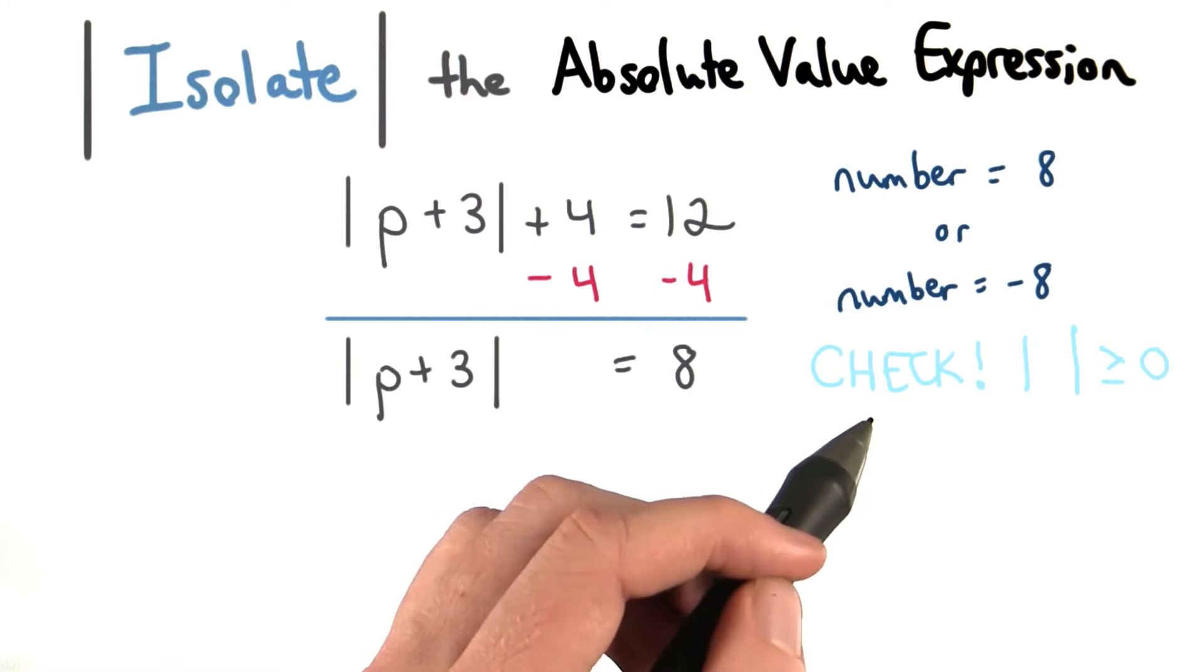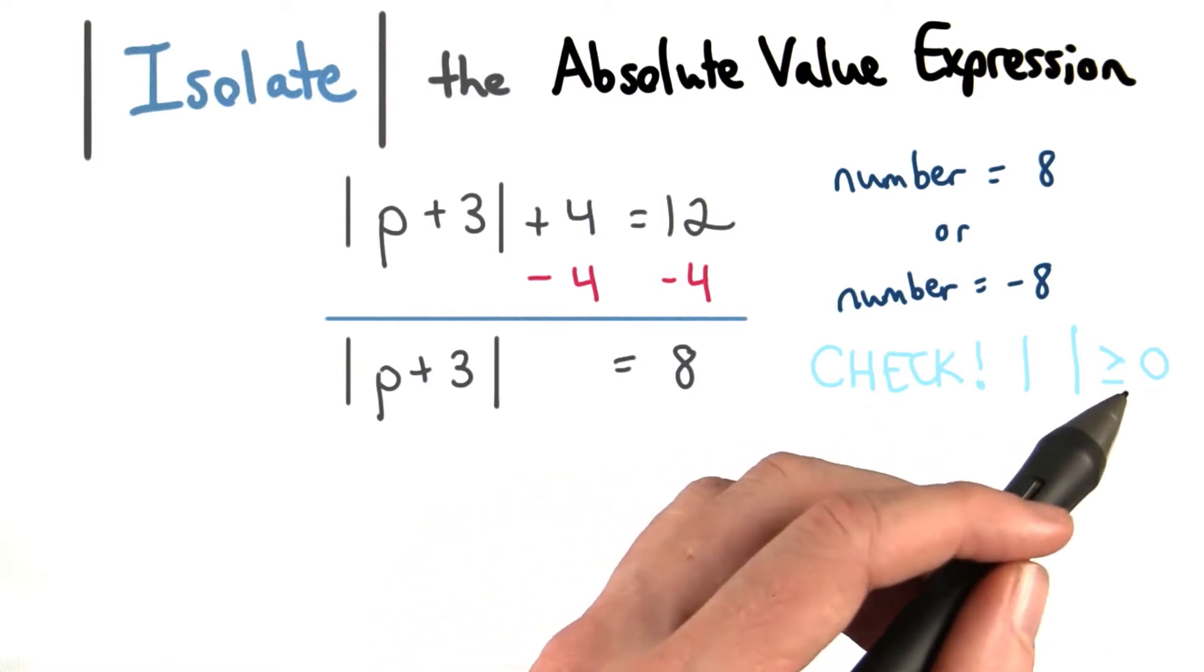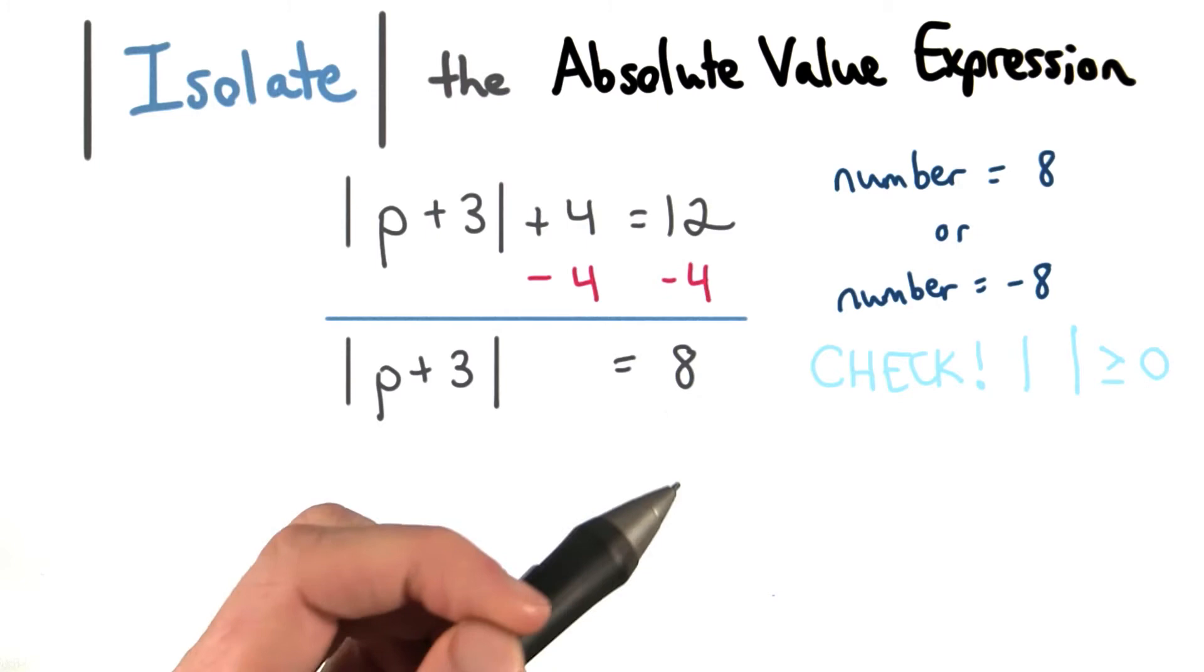Once we isolate the absolute value, we want to check. We want to make sure that it's greater than or equal to 0. Remember, distance is always positive.